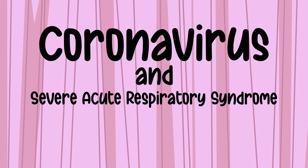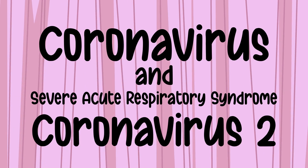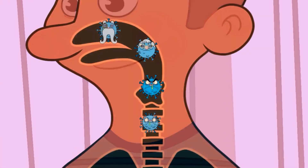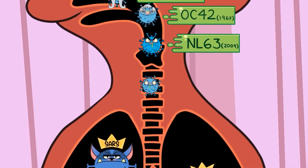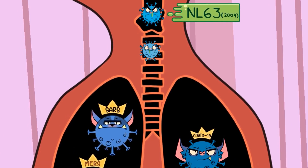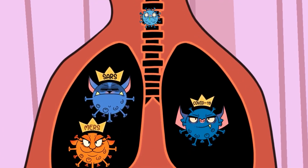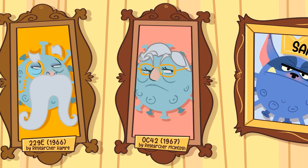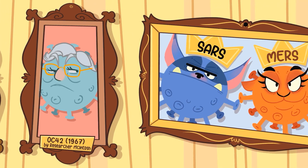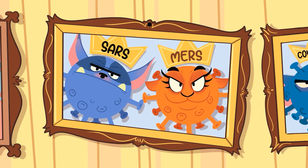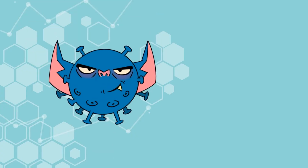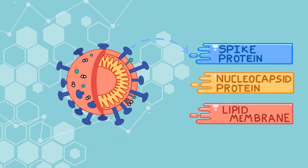Coronavirus refers to a family of viruses that cause respiratory illnesses. Human coronaviruses were initially described during the mid-1960s and were named for their crown-like shape when viewed under the microscope. Each member of the coronavirus family is unique, but there are similarities that make them all related. The most notable family traits are the crown-like spikes on their surface and the way they carry genetic material in the form of RNA, protected by both a corkscrew-shaped protein shell and an outer envelope layer.